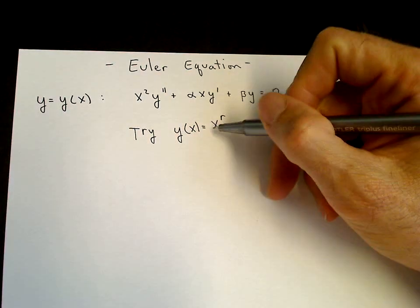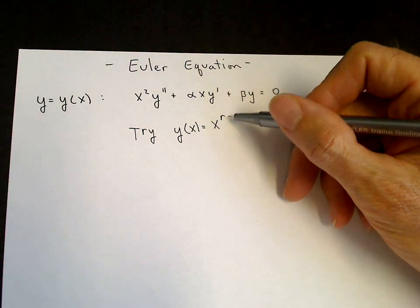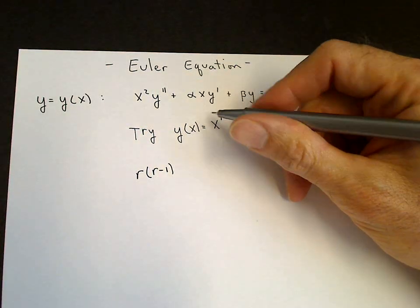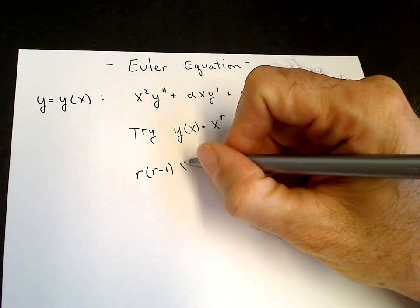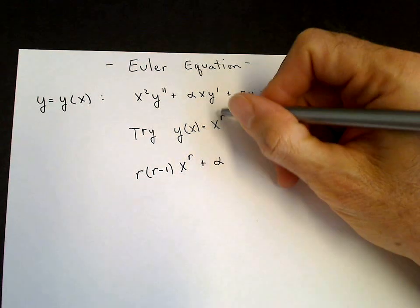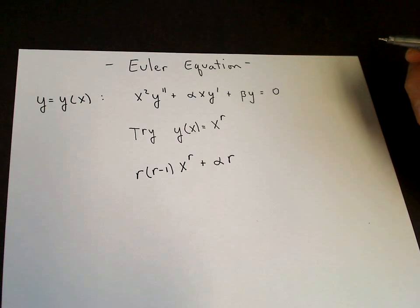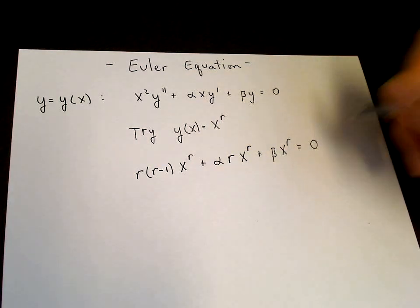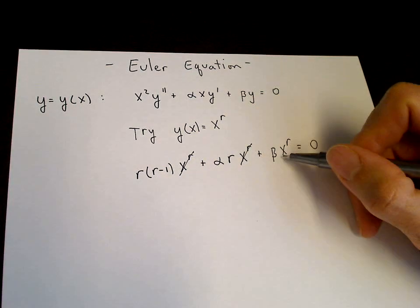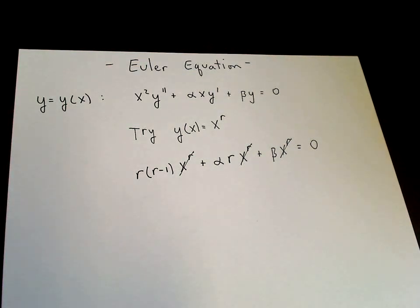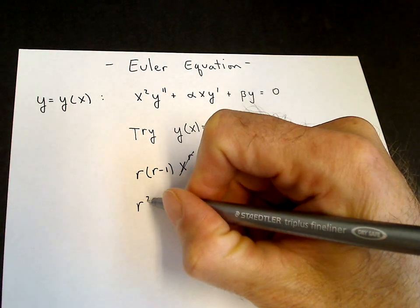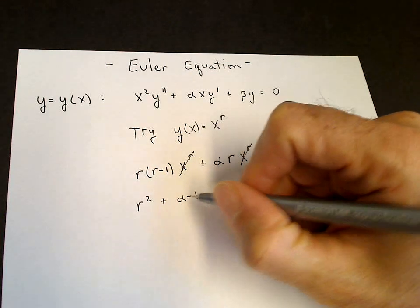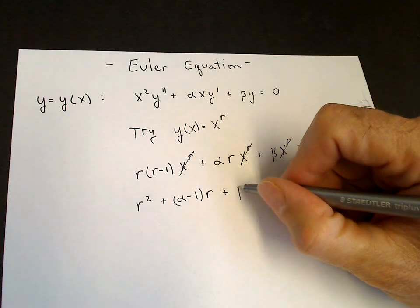When we substitute in, we'll get an x to the r minus 2, and we multiply by x squared, we get back x to the r. So we've got r times r minus 1 from the second derivative times x squared times x to the r minus 2, giving us back x to the r. Plus alpha — the first derivative drops down an r, and then the multiply by x gives us back x to the r — plus beta times x to the r equals zero. The x to the r cancels, which is why this ansatz is appropriate, and we get a quadratic equation in r: r squared plus alpha minus 1 times r plus beta equals zero.